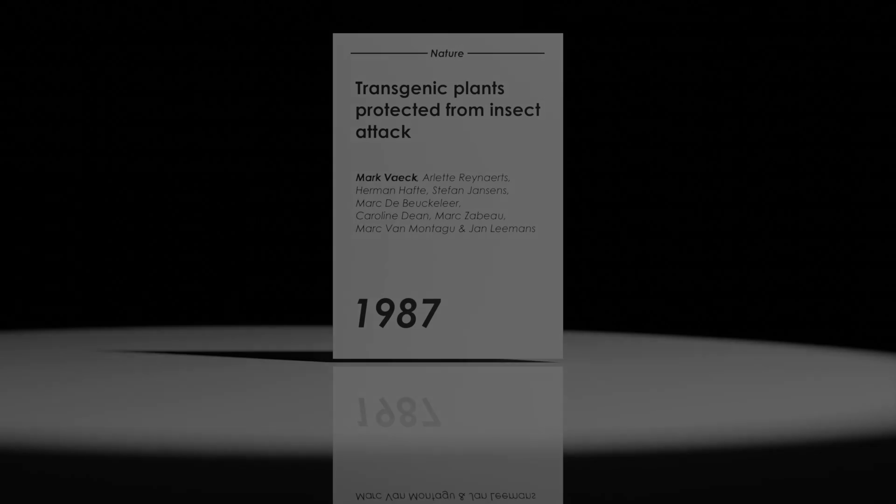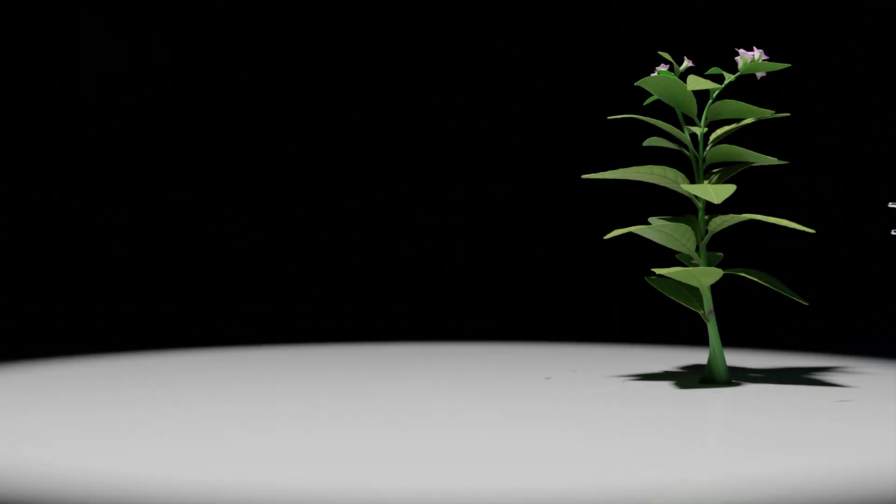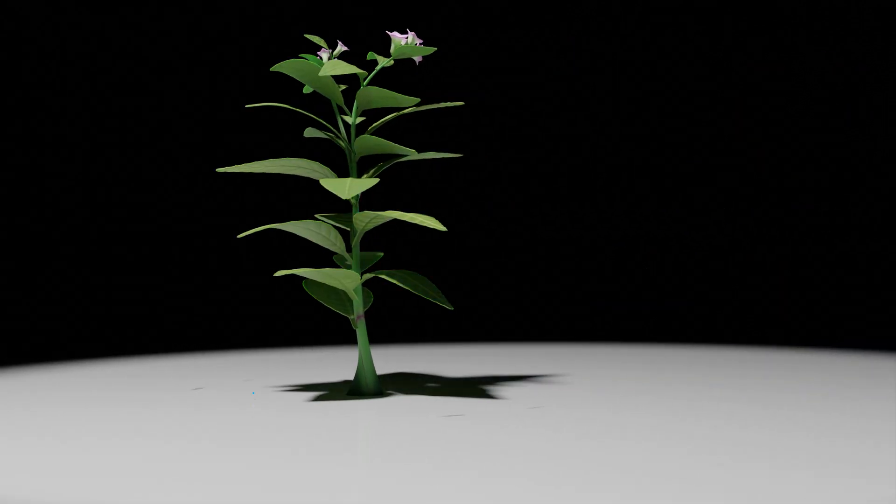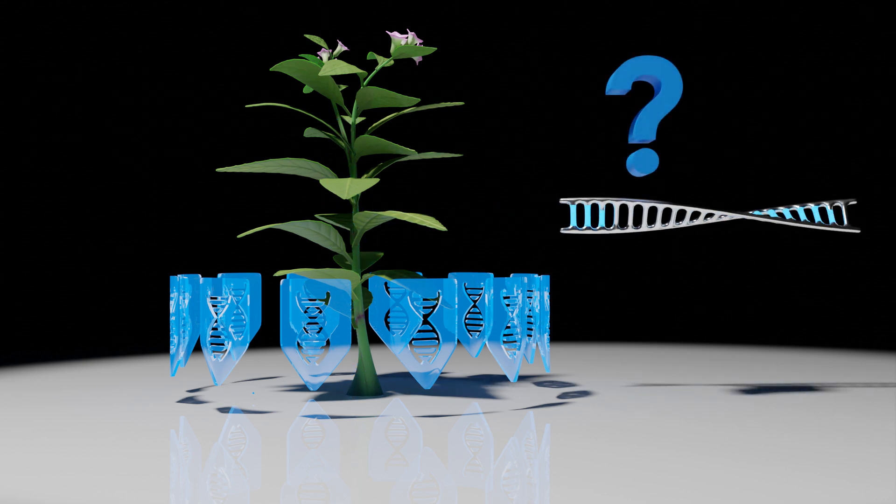As an example of a GM crop, let's look at a 1987 paper developing one. Mark Wieck and his team used the process I just explained to genetically modify a tobacco plant to be all but immune to an attack from a moth and its larvae. In fact, this type of modification eventually developed into a whole line of so-called BT crops. But what exactly was the modification that makes this possible?